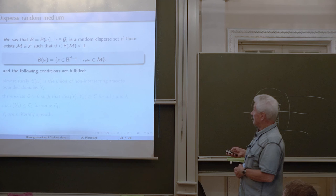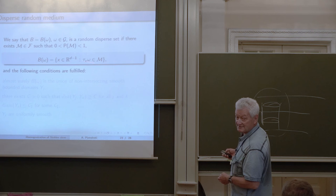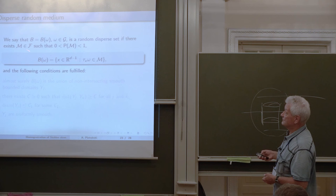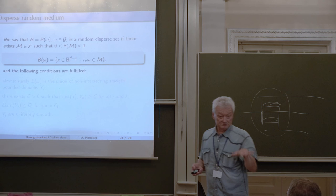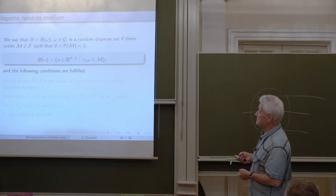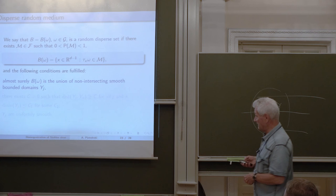Ergodicity means that any function invariant with respect to tau_x is a constant, or equivalently, any invariant set has measure 0 or 1. We consider a dispersed random structure: a random set — an element of our sigma-algebra with probability strictly between 0 and 1. The realization B of omega is the set of x for which tau_x omega belongs to M, giving a Borel measurable set in R^d parameterized by omega.